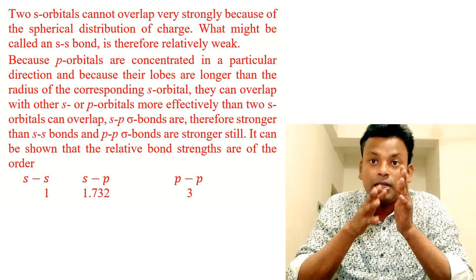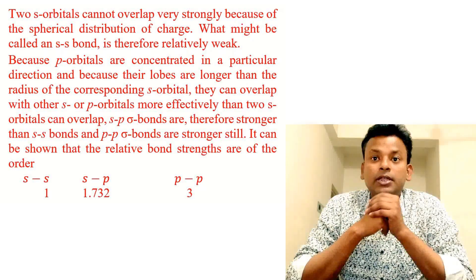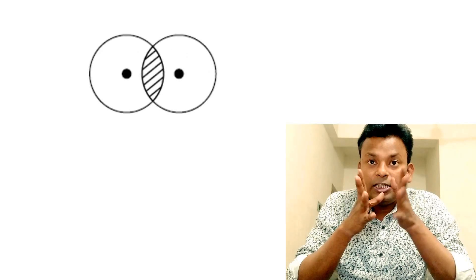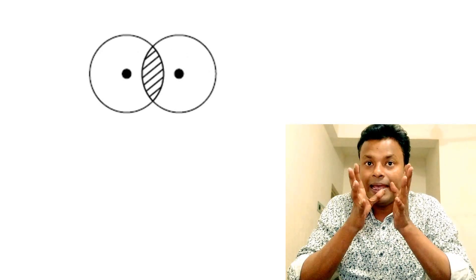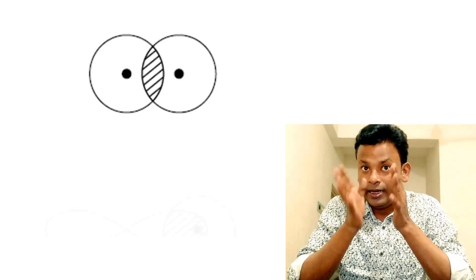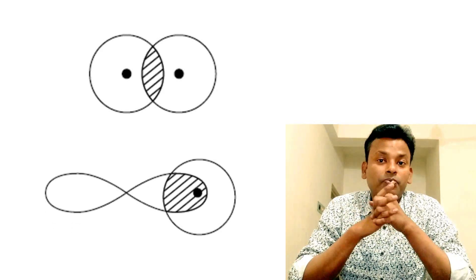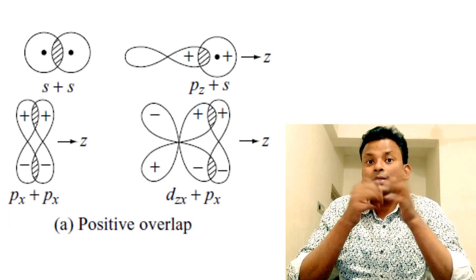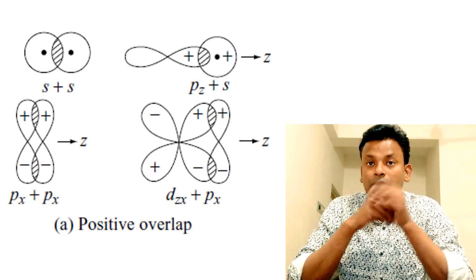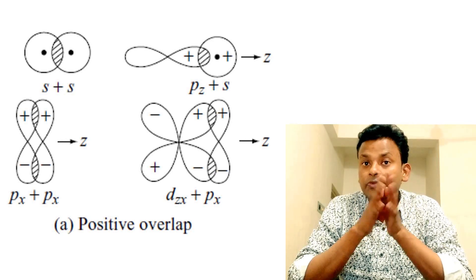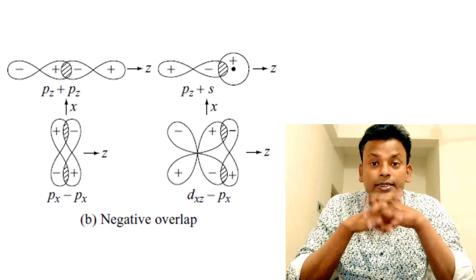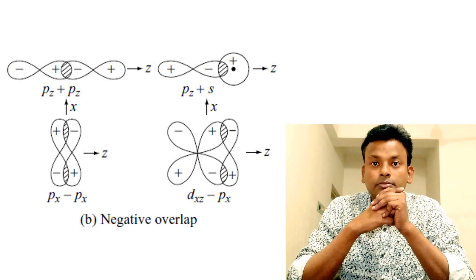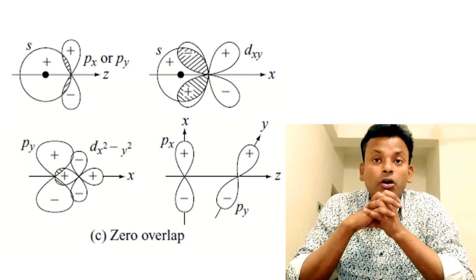Therefore, s-p sigma bonds are stronger than s-s bonds, and p-p sigma bonds are stronger still. It can be shown that the relative bond strengths are of the order: s-s < s-p < p-p. The following overlaps with s, p, and d orbitals are shown below: first, positive overlap; second, negative overlap; third, zero overlap.